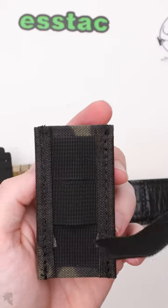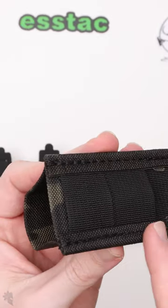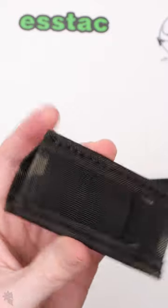How to use one wrap to mount an S-TAC pouch. You're only going to use the first two rows of molle webbing towards the top of the pouch.